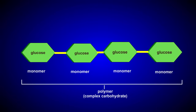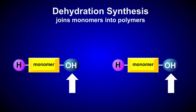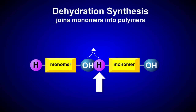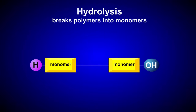Biological polymers are formed by dehydration synthesis reactions. As you can see here, each of the monomers in this reaction has a hydrogen, or H, and a hydroxyl, or OH, group. In the course of the reaction, the hydrogen is removed from one monomer and the hydroxyl group from the other. The hydrogen and hydroxyl group combine to form water, and a bond links the two monomers.